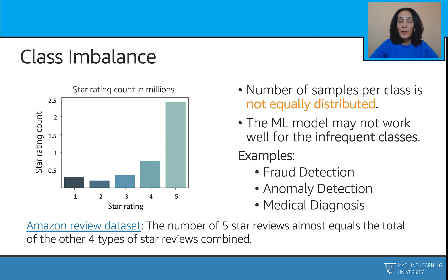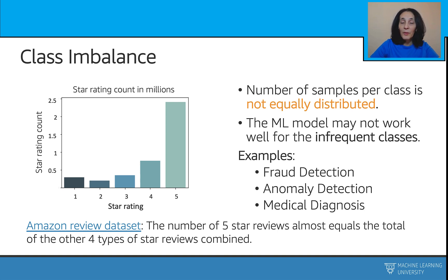Class imbalance is a surprisingly common problem in machine learning, specifically in classification, occurring in datasets with a disproportionate ratio of observations in each class — meaning the number of samples per class is not equally distributed. As shown with this histogram from the Amazon review dataset, the number of five-star reviews almost equals the total of all other star reviews combined. Another classic example is fraud detection: in a credit card fraud detection dataset, most transactions are not fraud, leaving something like a 50-to-1 ratio between fraud and non-fraud classes.